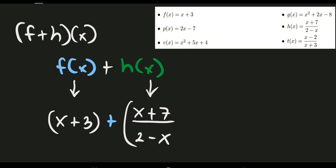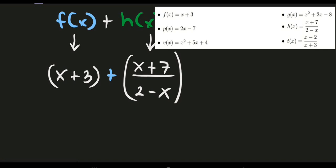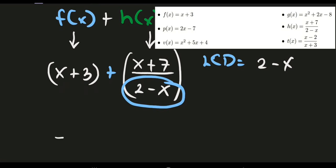As you can observe, we need to add a whole number to a fraction because we have a rational expression. Same procedure as adding a fraction to a whole number: first, identify the LCD. Since x plus 3 has an invisible denominator of 1, and the other denominator is 2 minus x, our LCD is 2 minus x. So let's use 2 minus x as our new denominator.